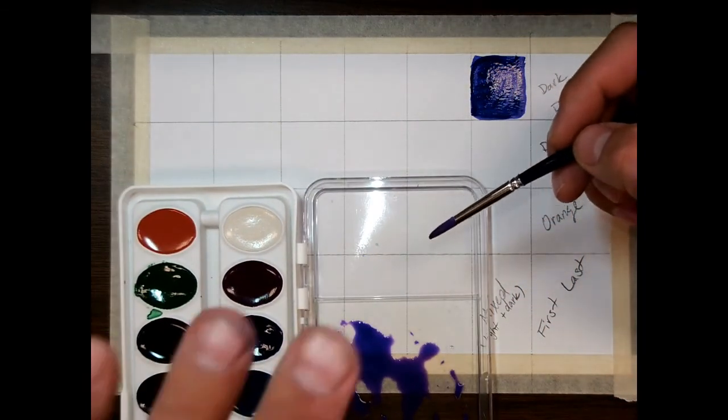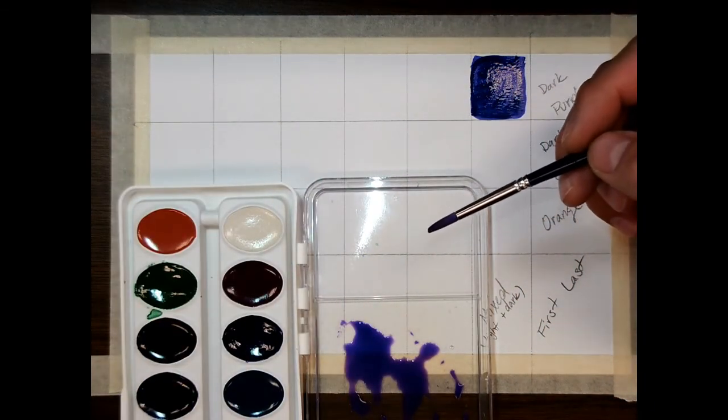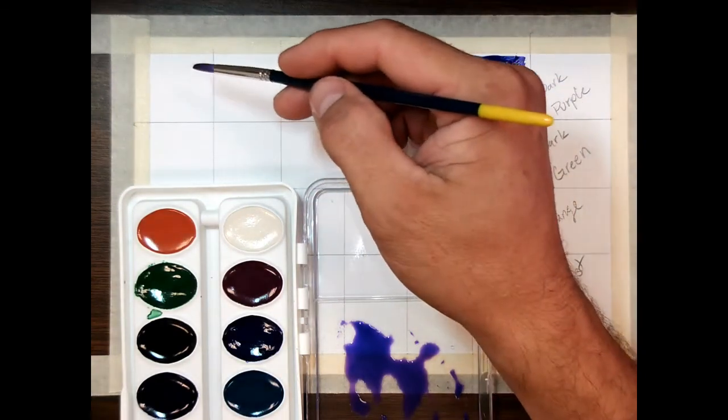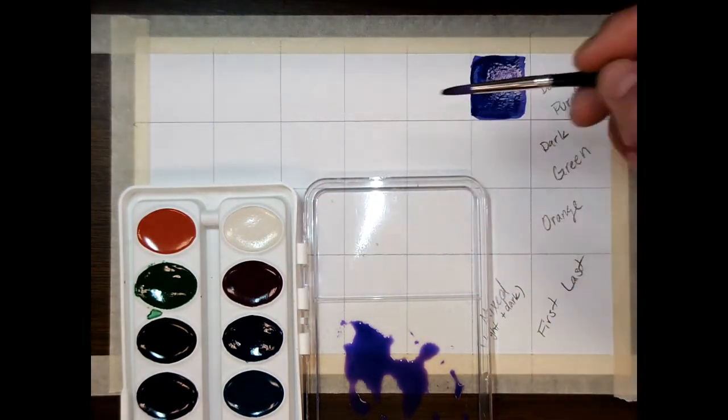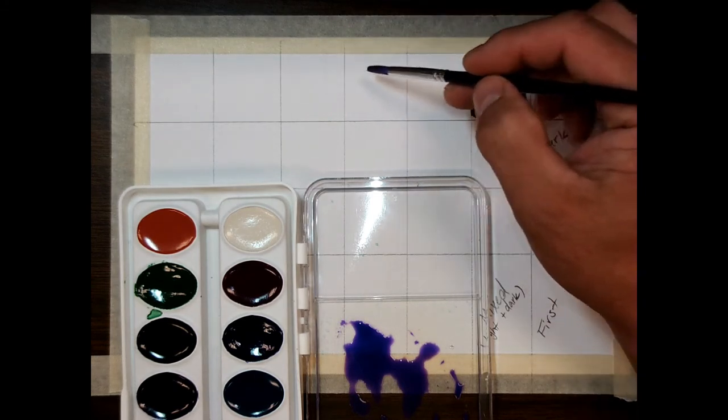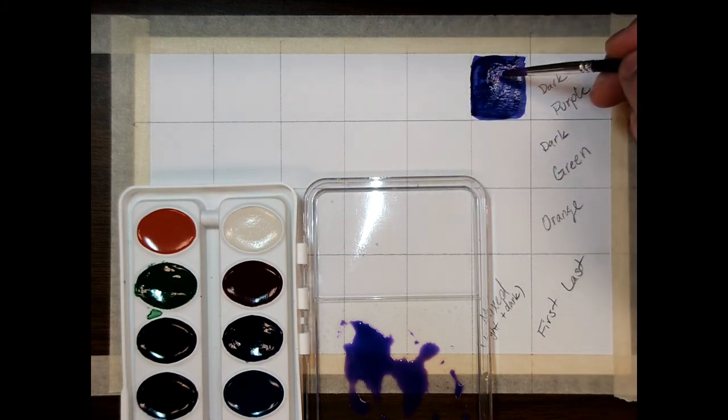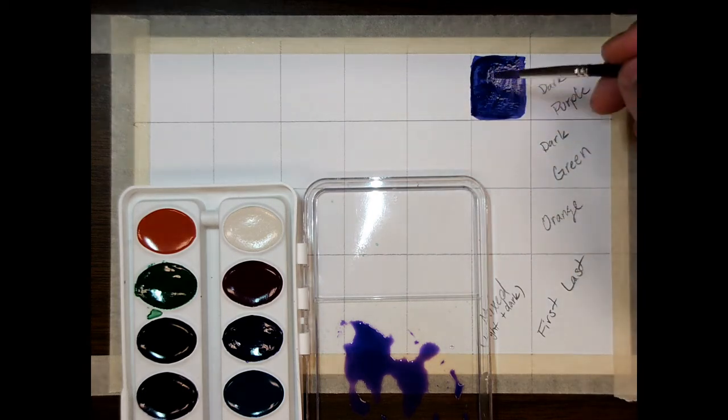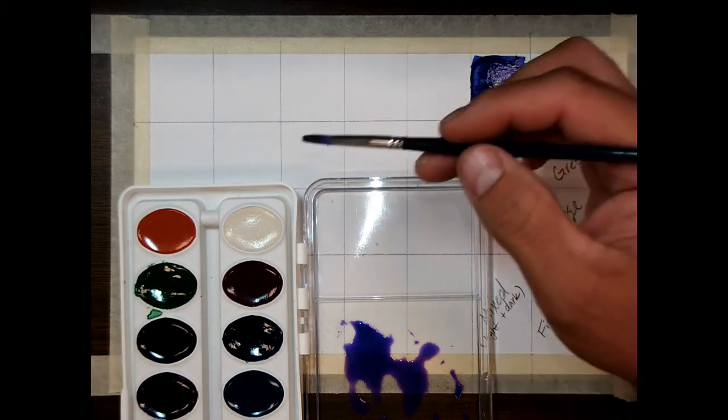So when you're creating a value scale, you typically don't want to start with the darks, you want to start with the very light colors. But for this value scale, we're starting with the very darkest so that we know, hey, if I'm in this middle range, and it looks like this really dark purple, then I'm doing something wrong. I've got too much pigment. So in this case, we're starting with a really dark. But in most cases, you're going to start really light.